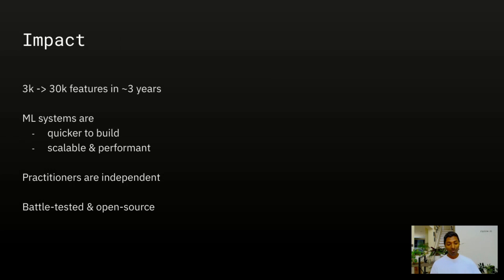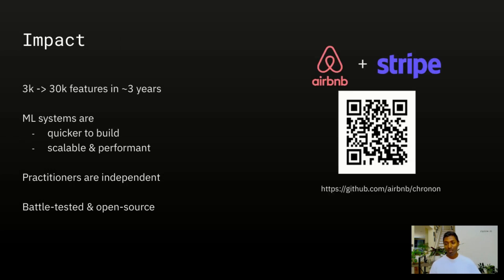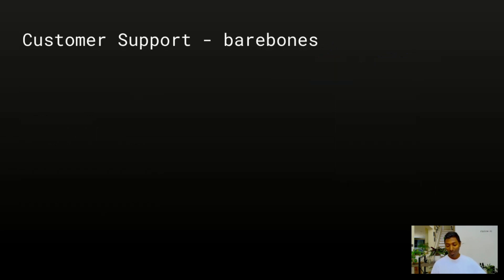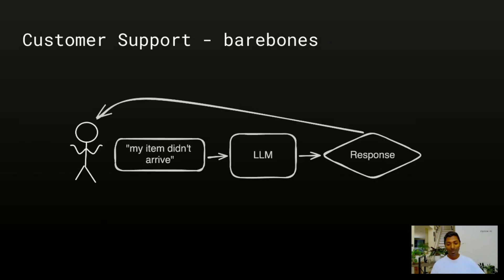We also open-sourced Cronon a couple of months ago. It's battle-tested at Airbnb and Stripe — you can use the QR code or the link to check out the project for yourself. I'm going to walk through how Cronon operates with a simple example: a chatbot for an e-commerce website where a user's item didn't arrive and they want to talk to the chatbot to understand what's going on.